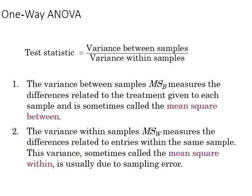The ANOVA test statistic is the variance between samples divided by the variance within samples, and so we're looking to see if there's more between sample variation than within sample variation.